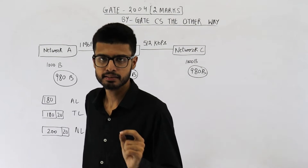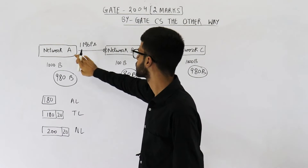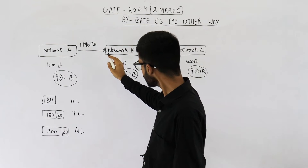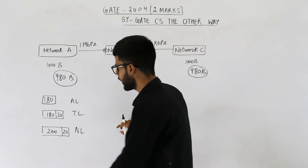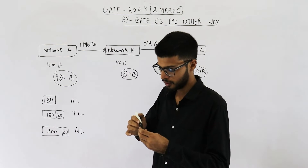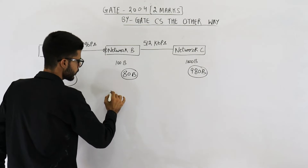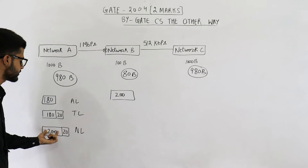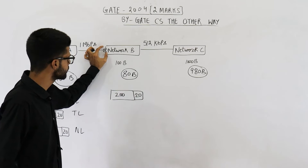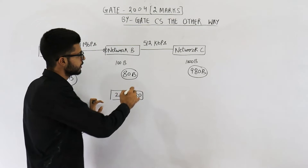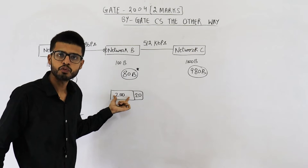Network layer will add its own 20 byte header, giving 200 bytes of data plus a 20 byte IP header. This datagram will then be given to the data link layer, which adds its own headers and trailers and sends the message. There will be a router connecting network A to network B. When this router receives the message, the data link layer removes those headers and trailers, and the datagram is extracted and given to the router's network layer. Now this network layer has got 200 bytes of data along with a 20 byte header. This router will see that in network B, an IP packet can contain maximum 80 bytes of data, but this incoming packet has 200 bytes of data.